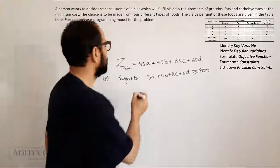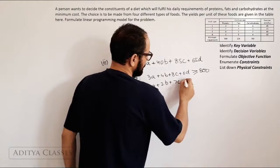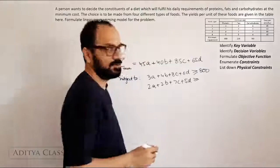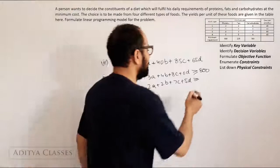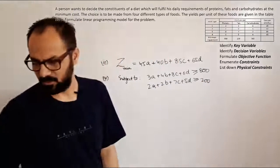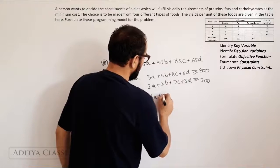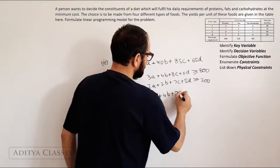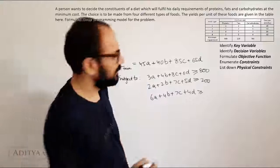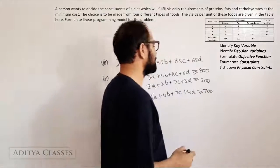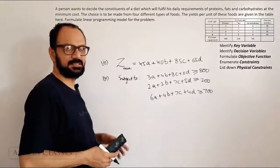Then next constraint would be 2A plus 2B plus 7C plus 5D greater than or equal to 200 units of fats. And last one is 6A plus 4B plus 7C plus 4D should be more than or equal to 700. So, these are the constraints, minimize this subject to these constraints.